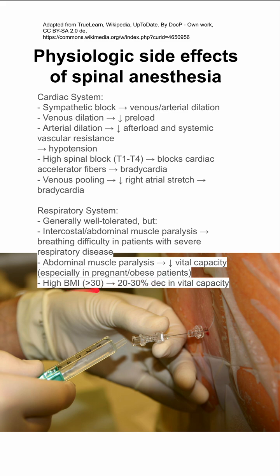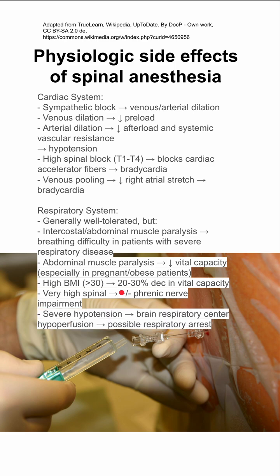And if you have a very high BMI, greater than 30, you can have a decrease in your vital capacity by 20 to 30%. If you have a very high spinal, you can have phrenic nerve impairment, which would affect your diaphragm movement and impair your breathing. And in severe hypotension, your brain respiratory center will be hypoperfused and that can cause respiratory arrest.